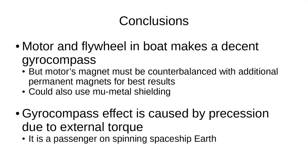So in conclusion, you can build a gyrocompass pretty easily. You just need a motor, a flywheel, and some kind of a boat. The only tricky bit is that typical motors have magnets in them, and that needs to be counterbalanced with some additional permanent magnets to try to get the aggregate magnetic torque near zero. In my case, it was not perfect, but it was close enough that you saw a pretty big effect. You can also use more exotic techniques like magnetic shielding. The gyrocompass effect is caused by the precession due to an external torque. That torque is caused by the Earth because it is a passenger on Earth.